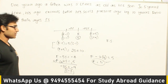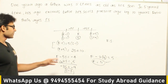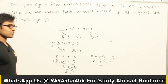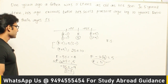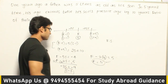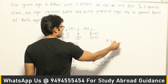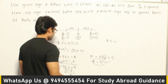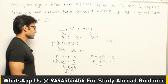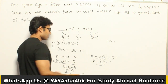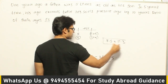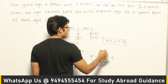So the father's age is 11 and the son's age is 3. This is just for the sake of the equation, so don't worry about the real-world meaning. The ratio of father's age to son's age is 11:3.